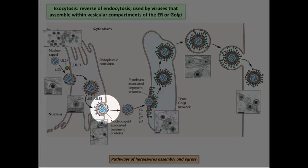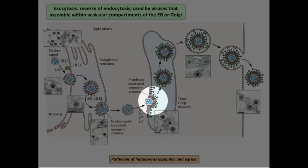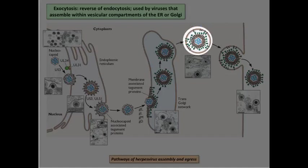Now we have a capsid with a single membrane. To get out of the ER, it fuses with the ER membrane, and now this naked viral capsid is in the cytoplasm again. It then buds into the trans-Golgi network and acquires a membrane there, and then buds out of the trans-Golgi and acquires a second membrane.